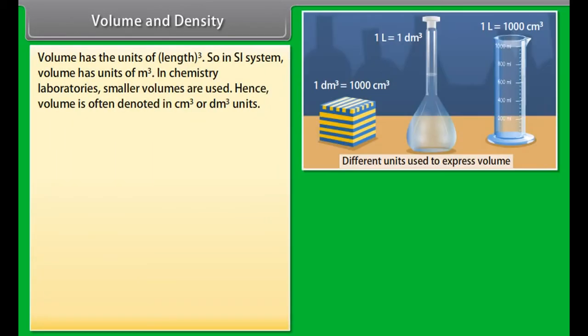Physical properties are those properties which can be measured or observed without changing the identity or the composition of the substance. Examples: color, odor, melting point, boiling point, density, etc.